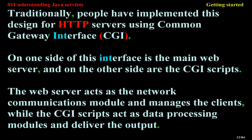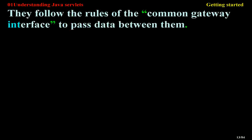Traditionally, people have implemented this design for HTTP servers using Common Gateway Interface, CGI. On one side of this interface is the main web server, and on the other side are the CGI scripts. The web server acts as the network communications module and manages the clients, while the CGI scripts act as data processing modules and deliver the output. They follow the rules of the Common Gateway Interface to pass data between them.